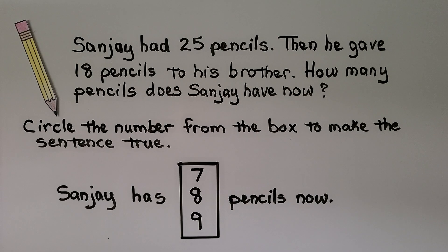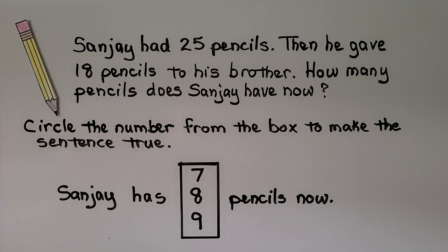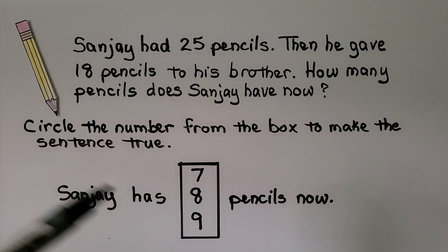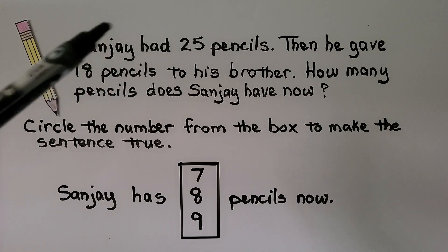Sanjay has 25 pencils. Then he gave 18 pencils to his brother. How many pencils does Sanjay have now? It's telling us to circle the number from the box to make the sentence true. Sanjay has some number of pencils.